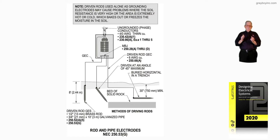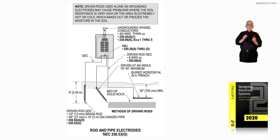250.121B says the building steel — structural steel — could not be used as a path or an effective ground fault path solely by itself. You'd still have to have an equipment grounding means.